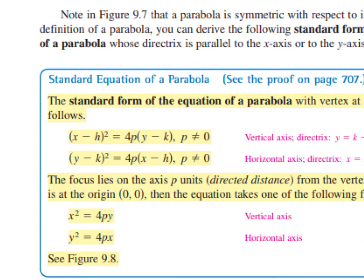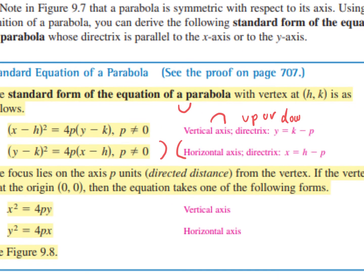Here is our standard equation of a parabola. We either have a parabola where x is squared or where y is squared. When x is squared, it's a vertical parabola — it either opens up or opens down. If y is squared, it either opens to the left or to the right, so it's a horizontal parabola. Up or down is when x is squared, and left or right is when y is squared.